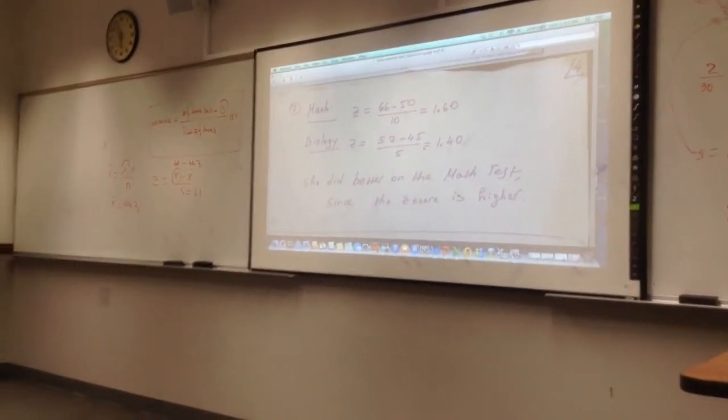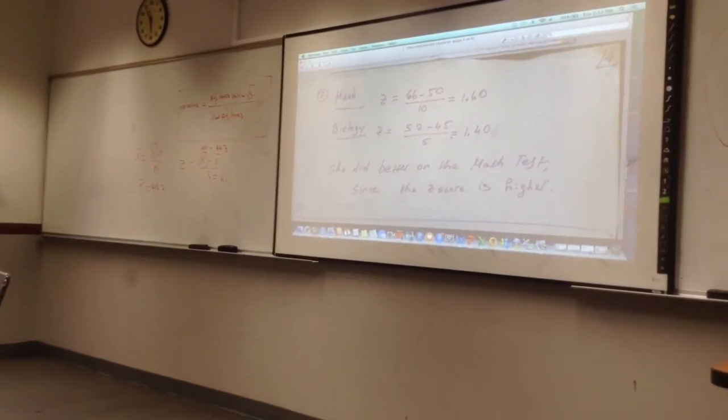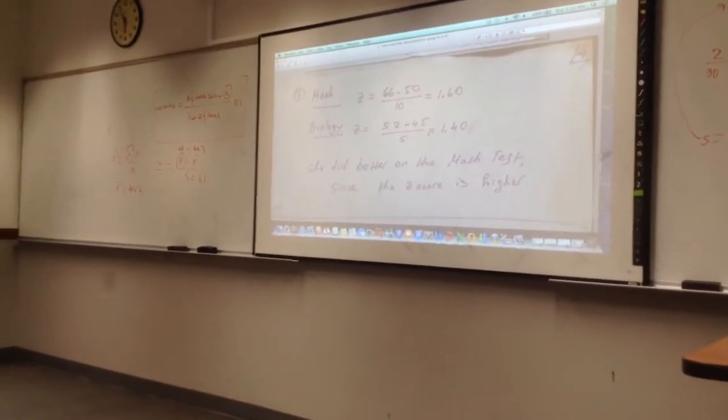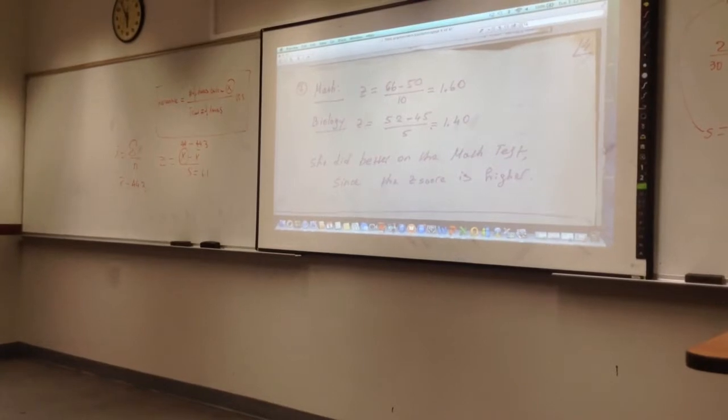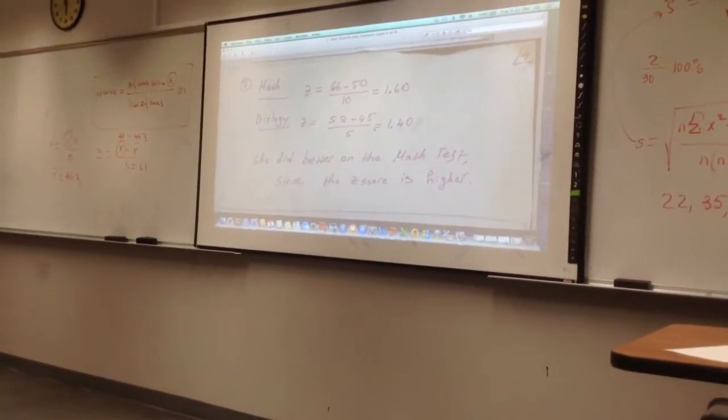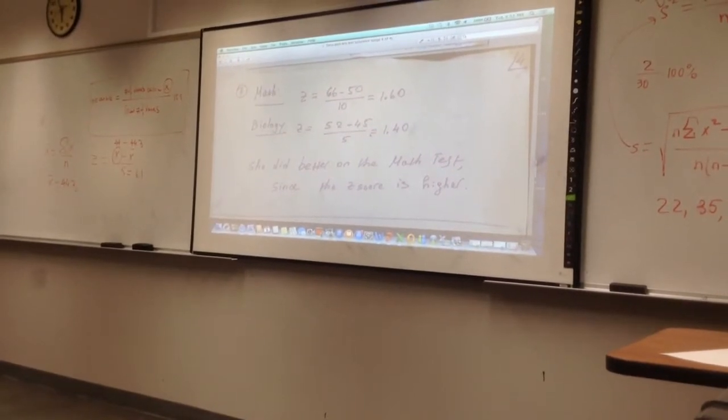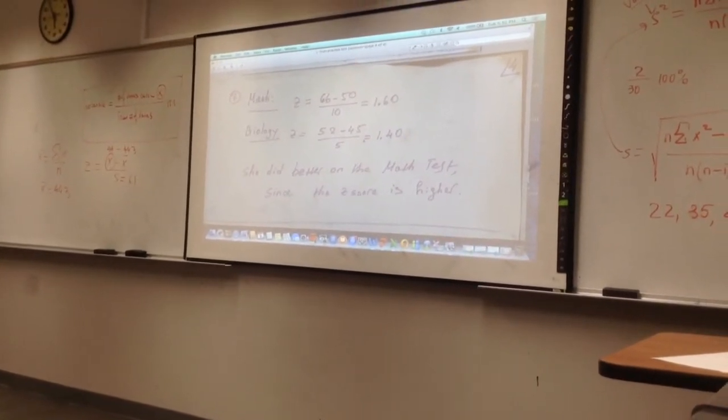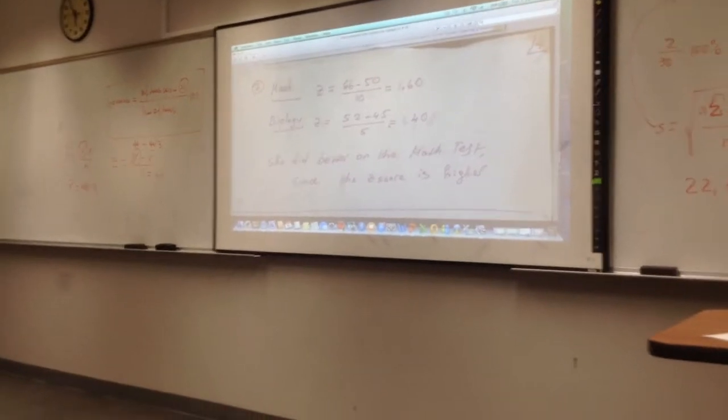66 was the score in the math test, the mean is 50, and the standard deviation is 10, so we get 1.6. The round-off rule for Z scores is two decimals. Now do the same thing for the biology test.